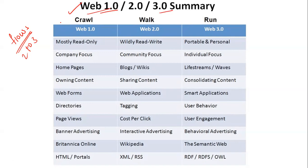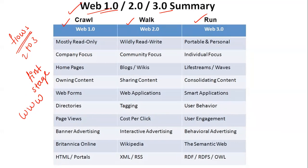Let's start with Web 1.0. This is the first stage of the World Wide Web — that is, the WWW evolution. So 1.0 is basically the static pages. Before we understand the detailed points, let's have a basic understanding of 1.0.